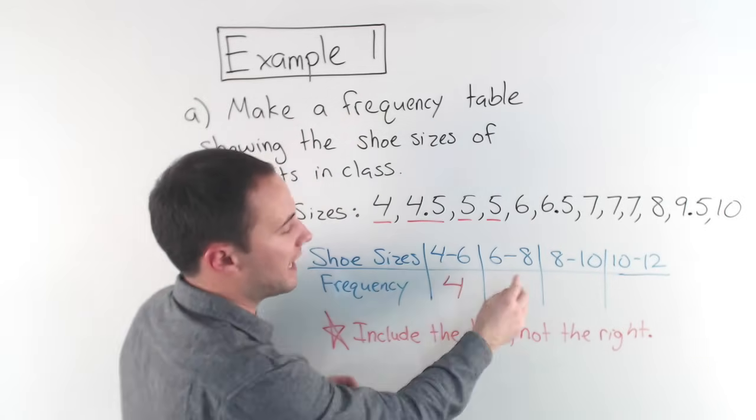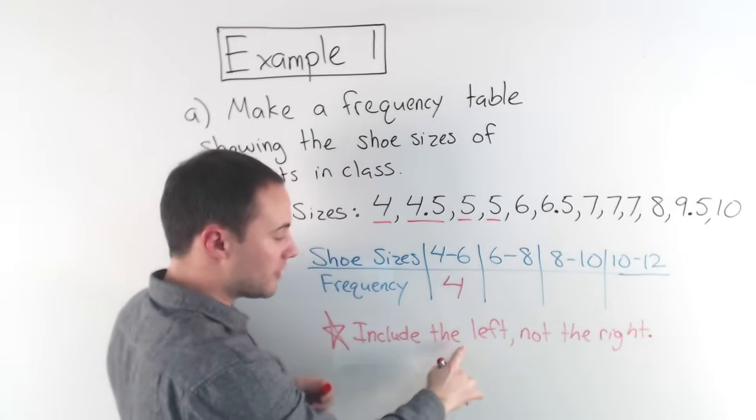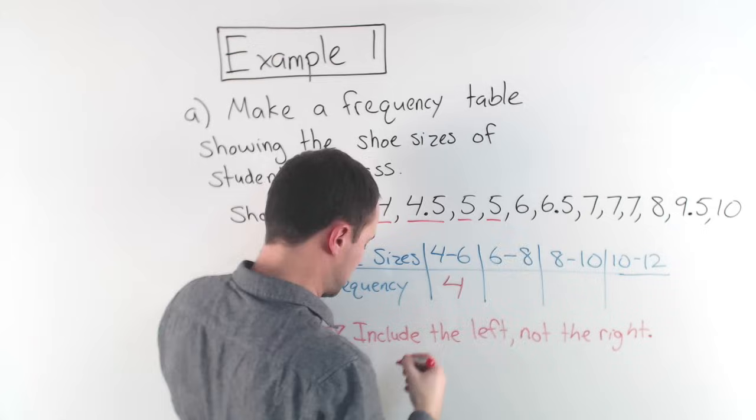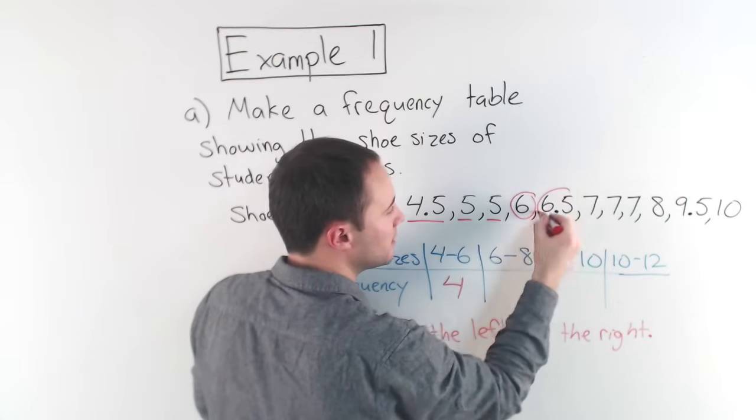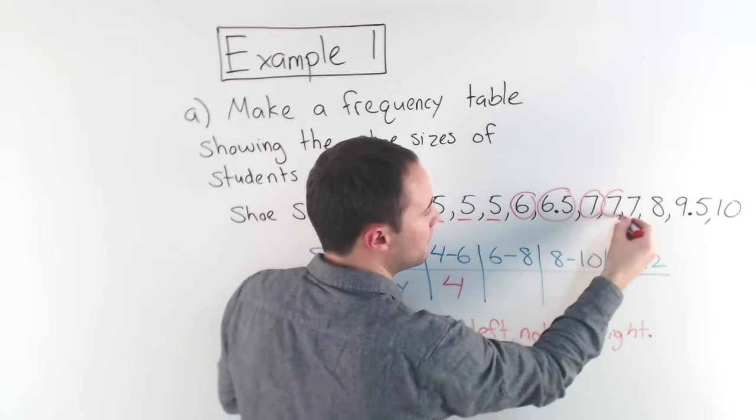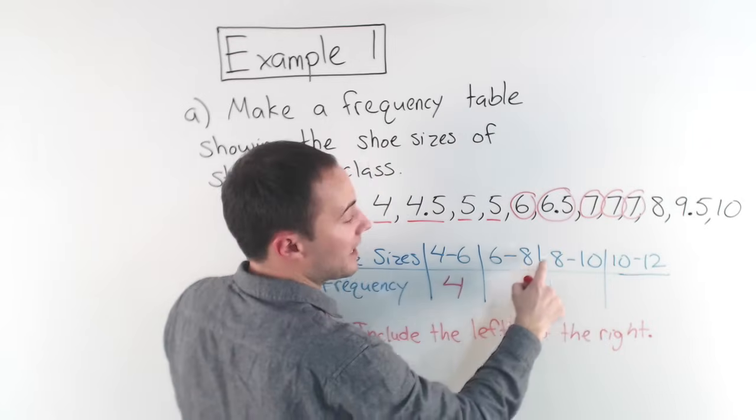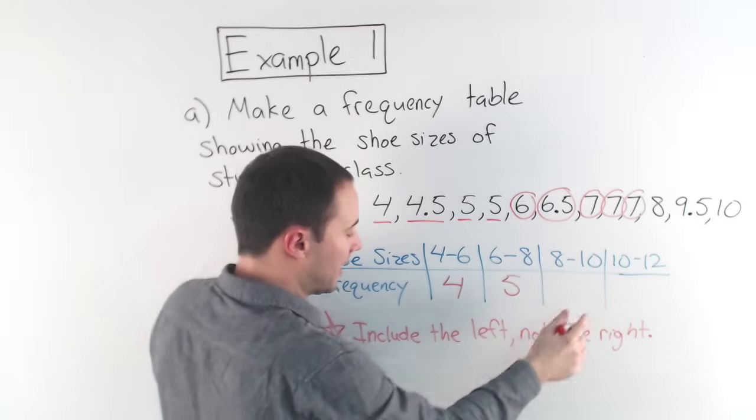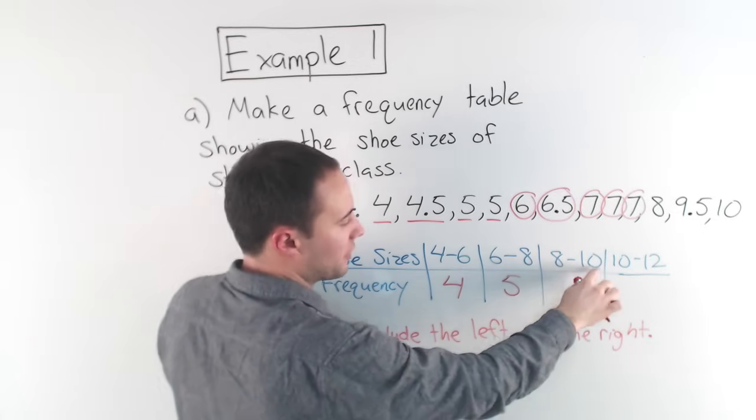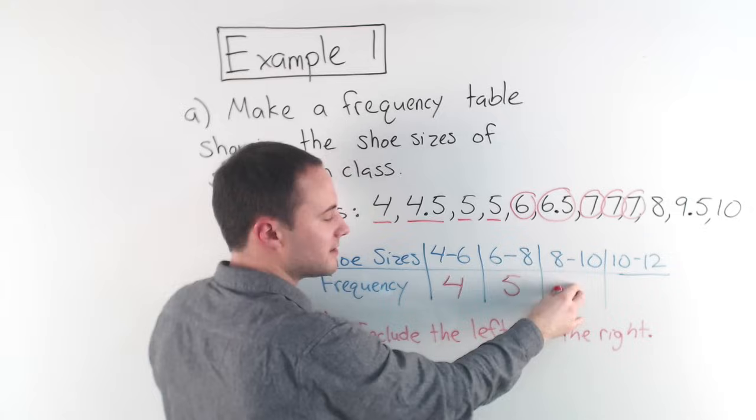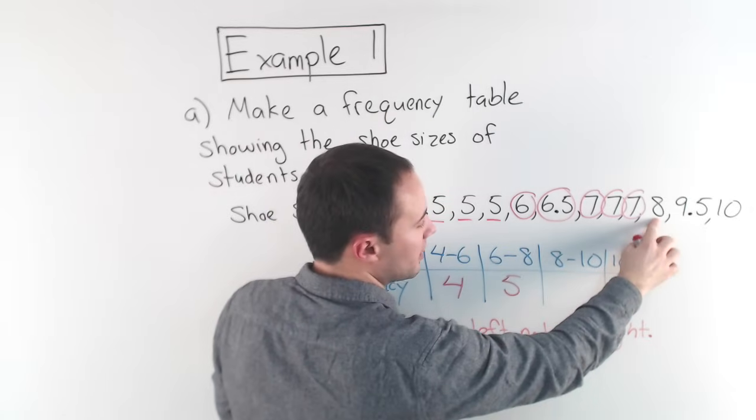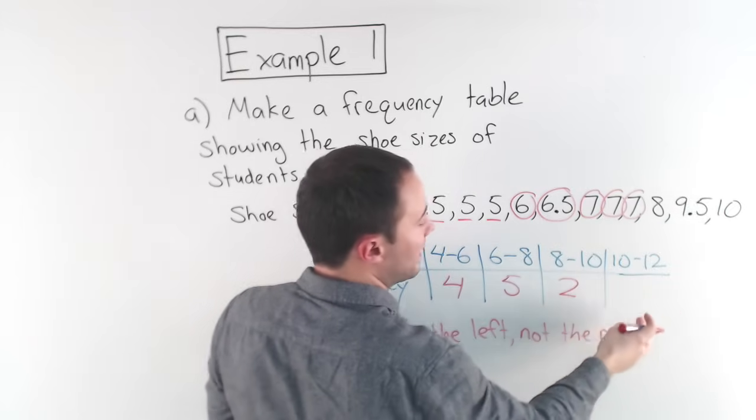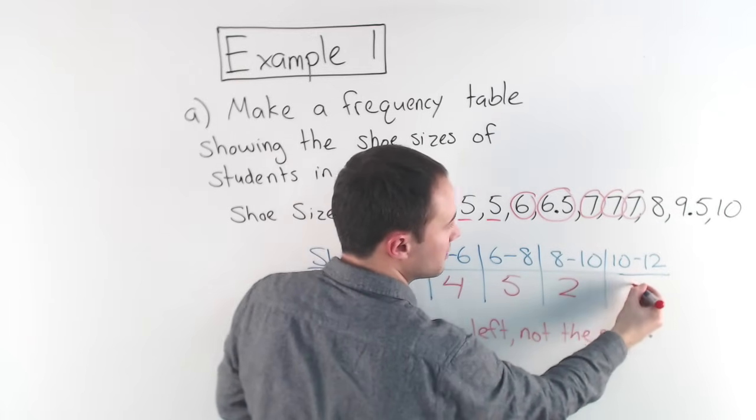Now six, six to eight here. I include the value on the left. So I'm including that six. So here's that six. There's one, two, three, four, five. I'm not including that eight. So I've got five here, right? You see that now here again, include the value on the left, not the right. So I include the eight in this interval, not the 10. So there's one, two, right? I don't include the 10. And then this 10 is included here. So just one.